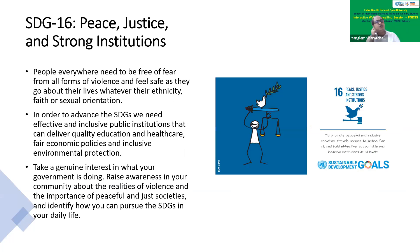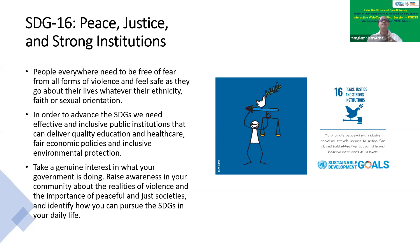SDG 16 is about peace, justice, and strong institutions. Without peace and justice, sustainable development cannot be achieved. We need strong institutions. Traditional forms of institution were very strong, and because of those cultural norms and strong traditional institutions, the harmonious relation between nature and society was maintained.